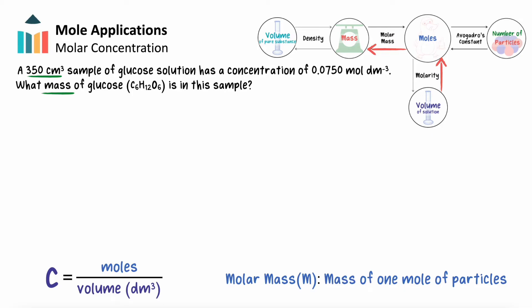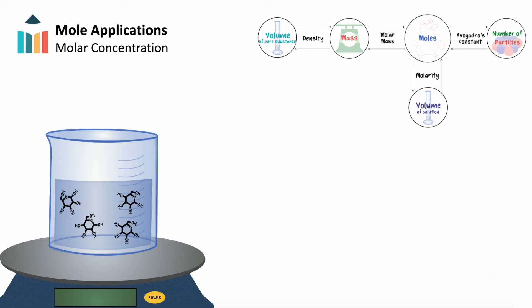This can sometimes be a place of high confusion. Many students at this point may try and solve this problem using density. So why can't we use density here? If we calculate mass using density, we need to identify what we're actually taking the mass of.